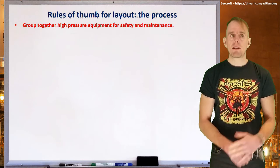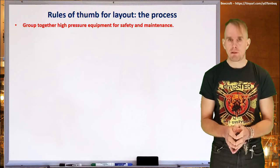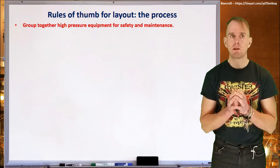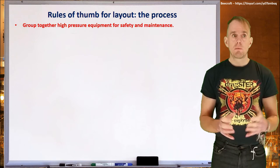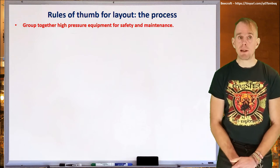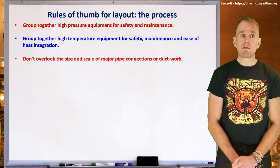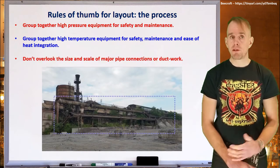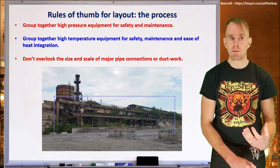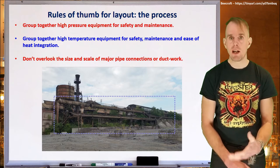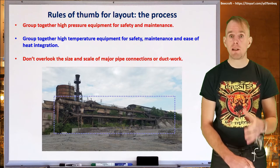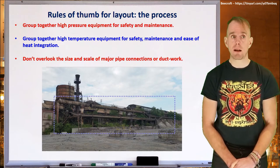Now let's think about some rules of thumb to lay out the process. Having addressed safety considerations, we need to think about how the process works. Group together high-pressure equipment for safety and for maintenance. Group together high-temperature equipment, also for safety and maintenance, but also for ease of heat integration — we don't want to be wasting energy, and it is very usual to have fairly complex heat integration schemes in any piece of plant.